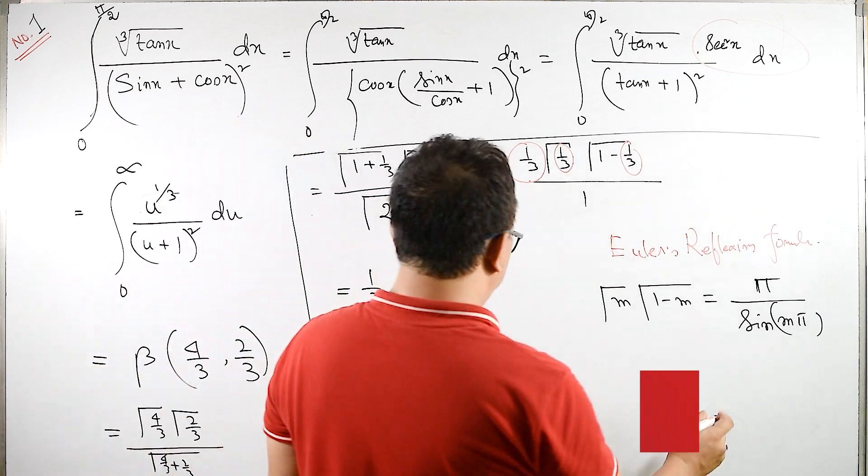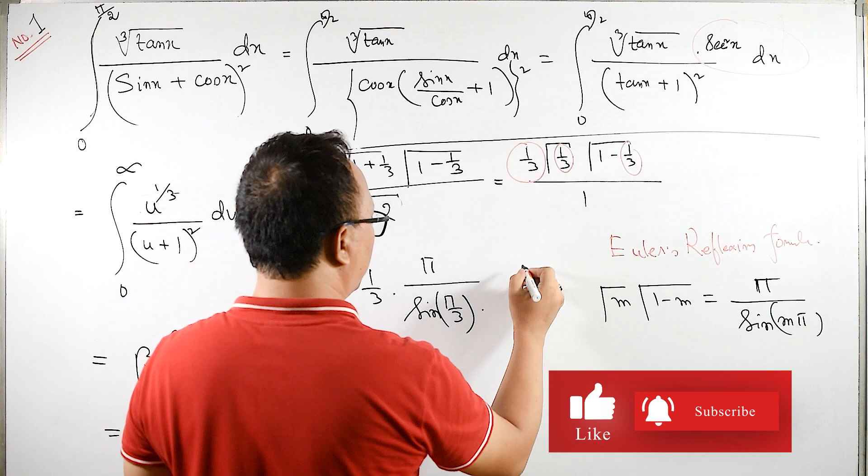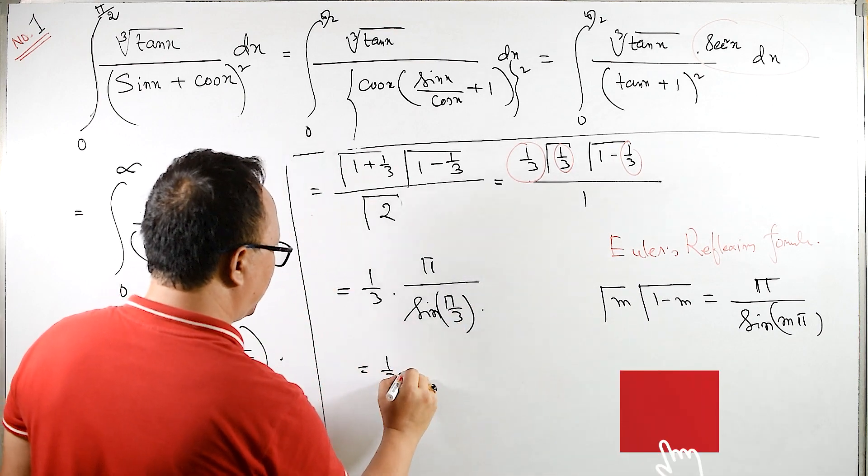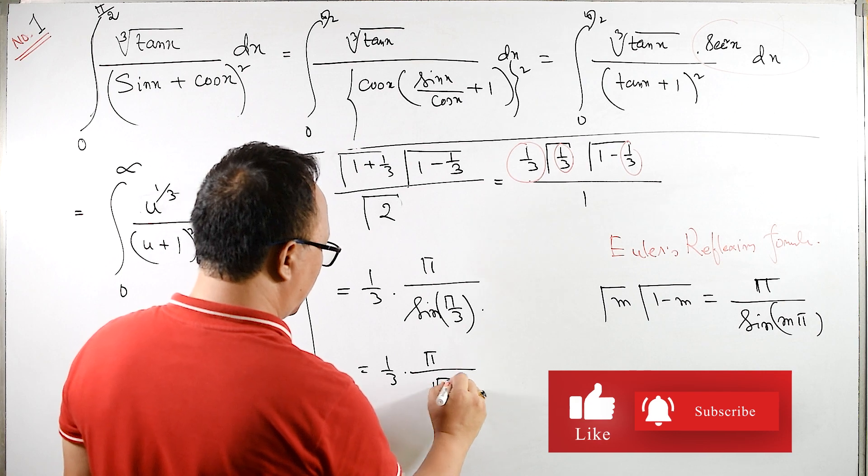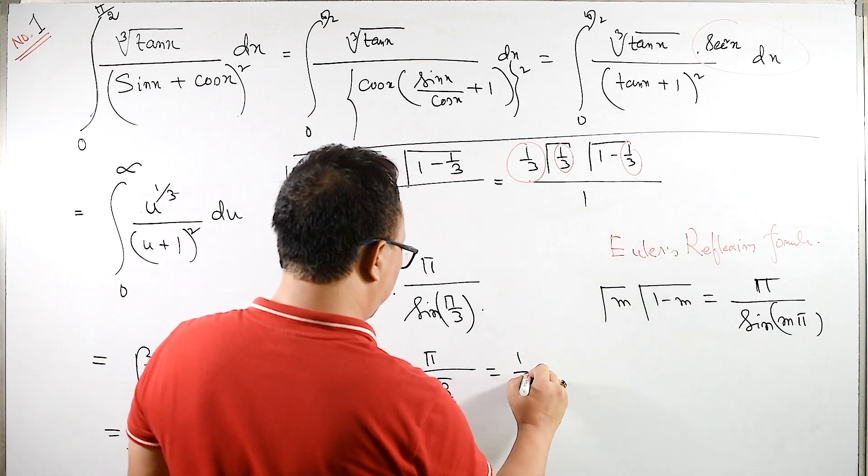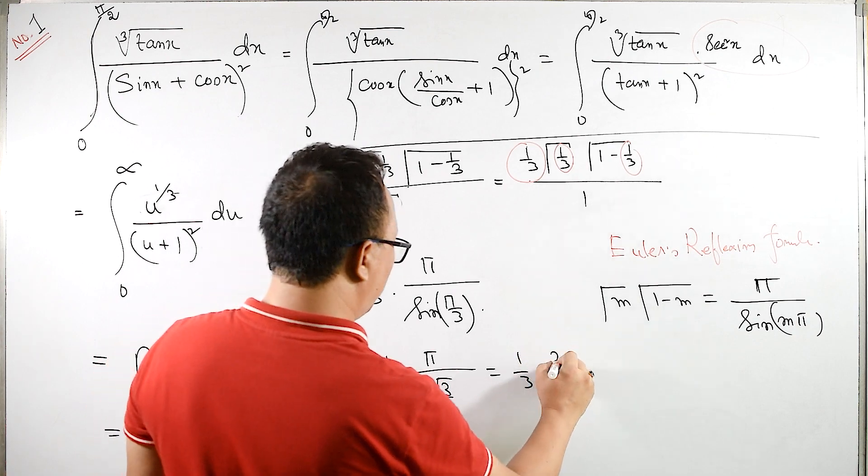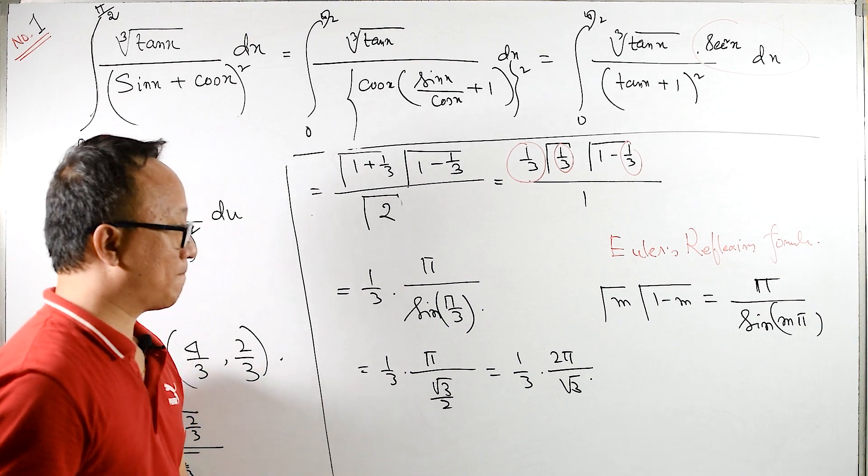Sine pi by 3 is 60 degree. So is equals to 1 by 3 pi, sin 60 is root 3 by 2 is equals to 1 by 3, to bring up 2 pi upon root 3.